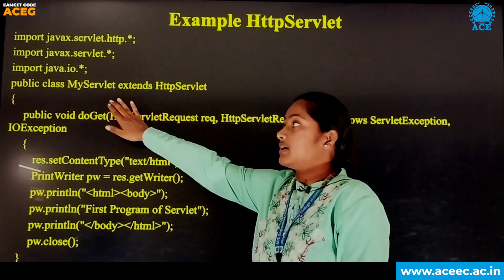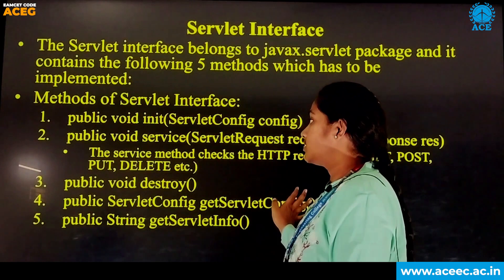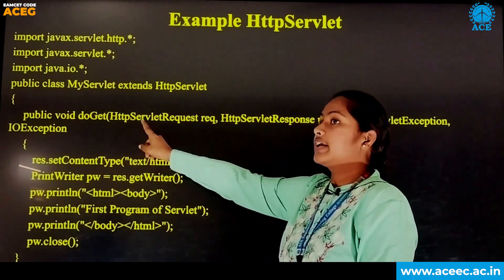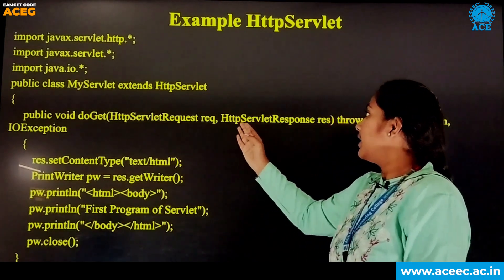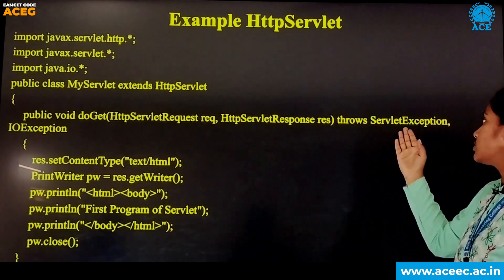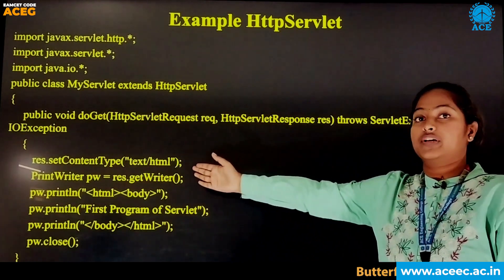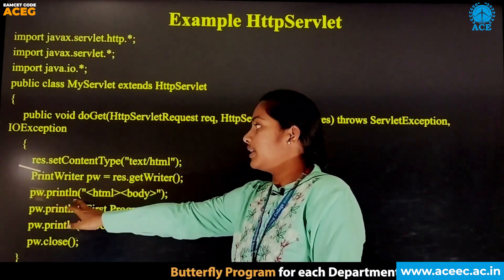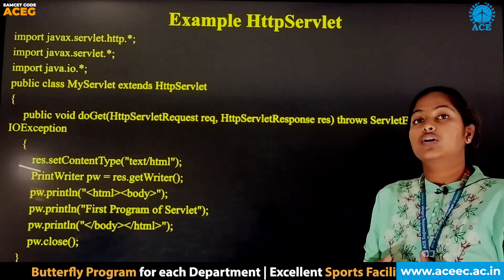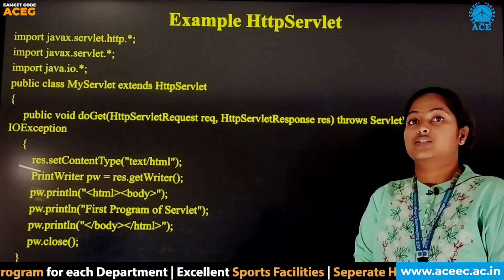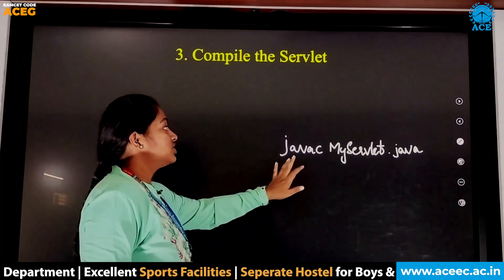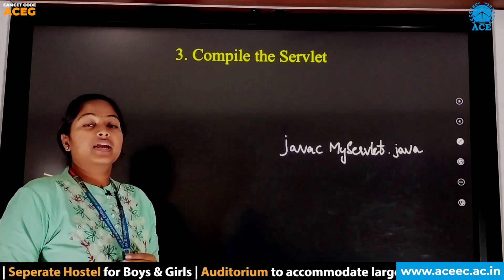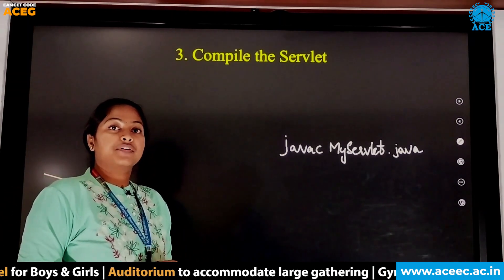Here we use MyServlet which extends HttpServlet. We use a function called doGet() which takes parameters like HttpServletRequest and HttpServletResponse, and throws exceptions of ServletException and IOException. We use pw.println() to print on the web pages, not on the system desktop. We use 'javac MyServlet.java' to compile the Java program; it generates the .class file in the classes folder which we have created.